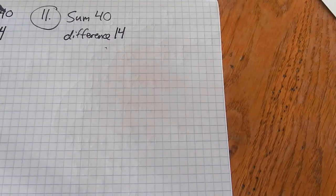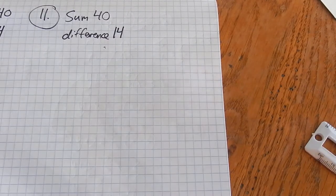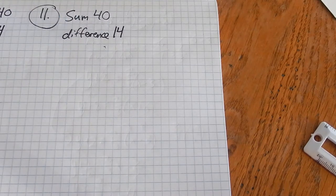This is Math 98, Practice Test 1, problem number 11. On number 11, they tell us that the sum of two numbers is 40, and the difference of these two numbers is 14. We're supposed to find these numbers.